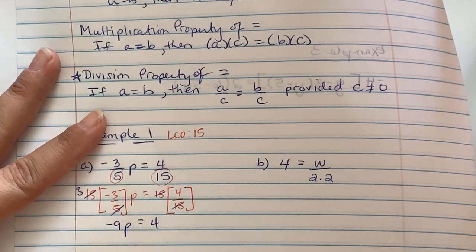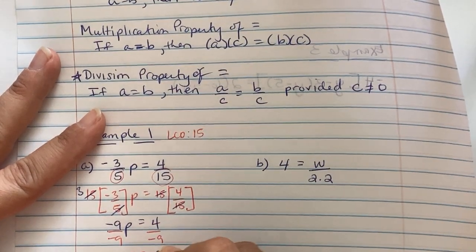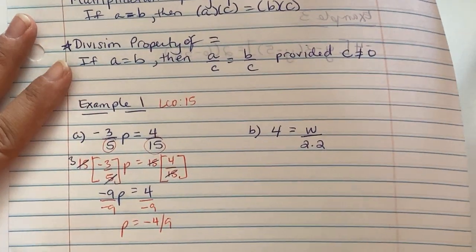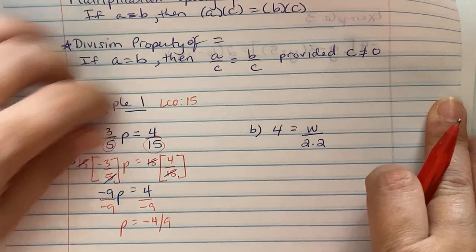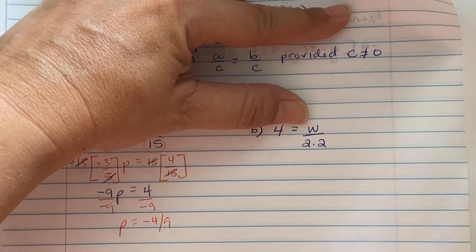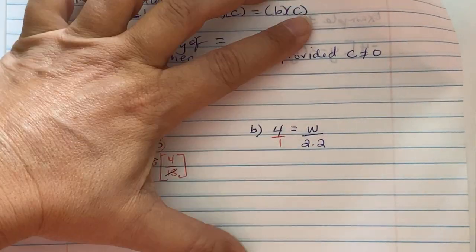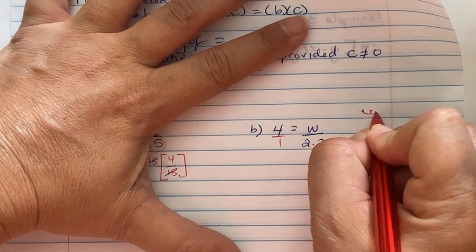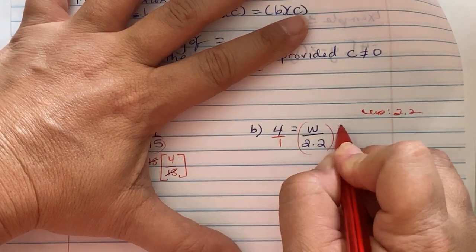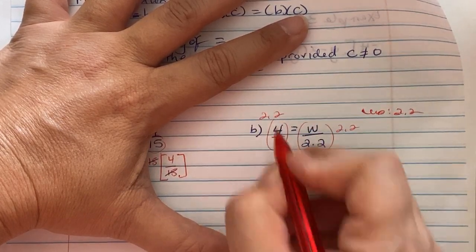Divide both sides by negative nine, so p is negative four-ninths. When we look at b, we see a whole number four equivalent to w over 2.2. First thing we're going to do is make it a fraction and a proper fraction. So in this instance, our LCD is 2.2.